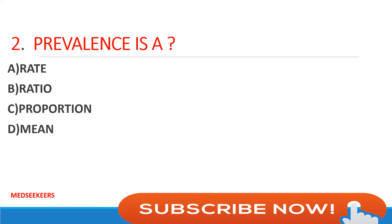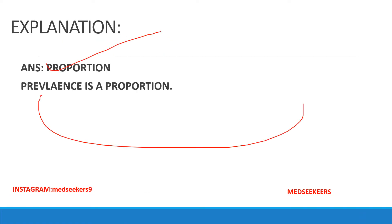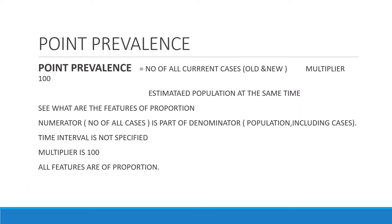Which among the following do you think is correct? Is prevalence a rate? Is prevalence a ratio? Is prevalence a proportion? Is it a mean? Comment your answers. Your answer should be proportion — prevalence is a proportion.